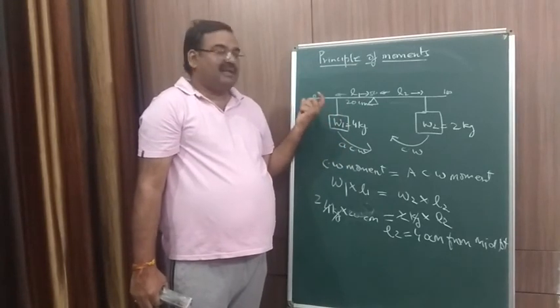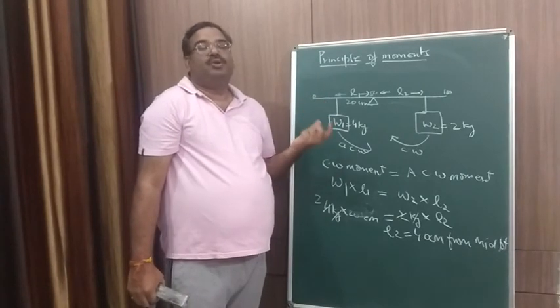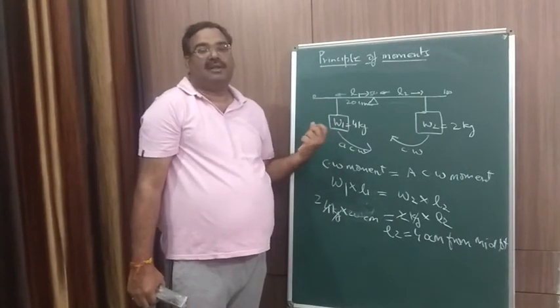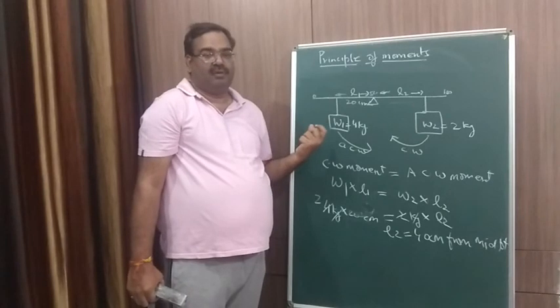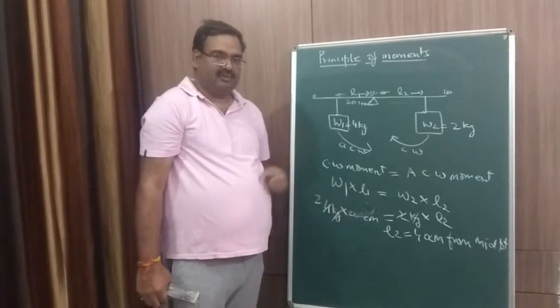So basically you are getting many numericals on this. You can try those numericals keeping in mind that the rod that is being placed on the fulcrum should be uniform. Is it clear? I hope that you will do the numericals. Thank you.